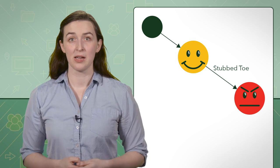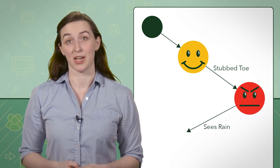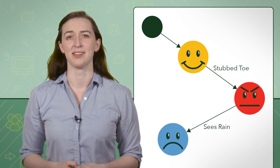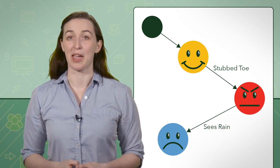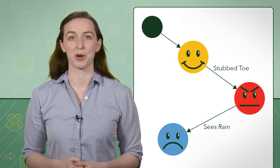While this person is angry, they might notice that it's raining outside, and this makes the person sad. So this would change their state from angry to sad. This is how a state diagram works.